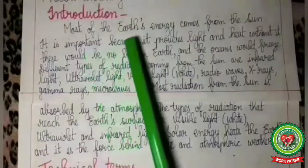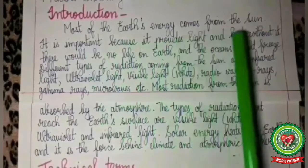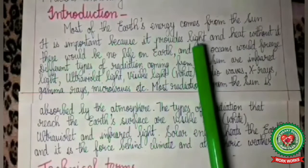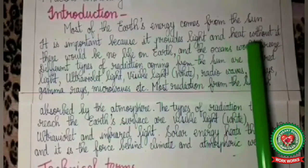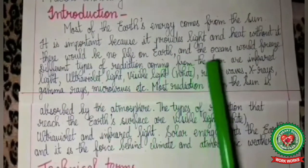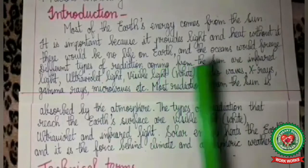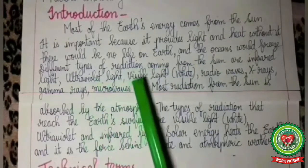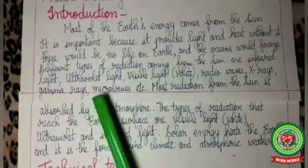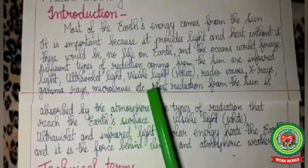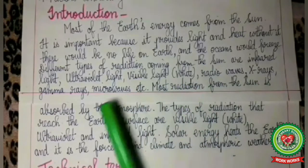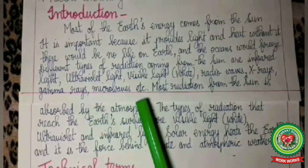Most of the earth's energy comes from the sun. The sun is an important source of heat and light for the earth. Without it, there would be no life on the earth and the oceans would freeze. Different types of radiation coming from the sun are infrared light, ultraviolet light, visible light i.e. white light, radio waves, x-rays, gamma rays, microwaves, etc.